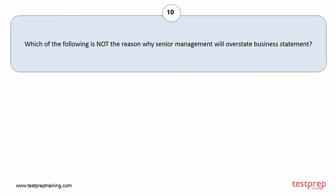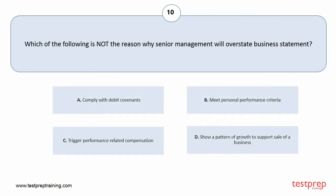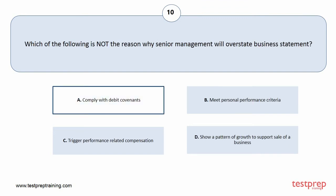Question number 10. Which of the following is not a reason why senior management will overstate a business statement? Your options are A. Comply with debt covenants, B. Meet personal performance criteria, C. Trigger performance-related compensation, D. Show a pattern of growth to support sale of a business. The correct answer is option A.